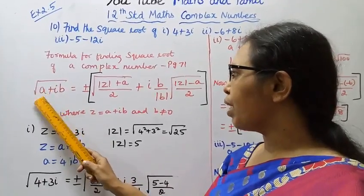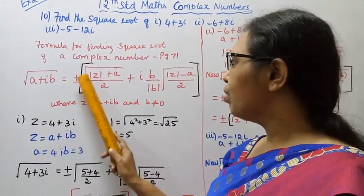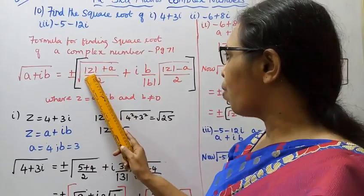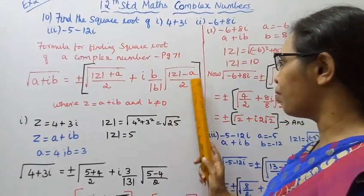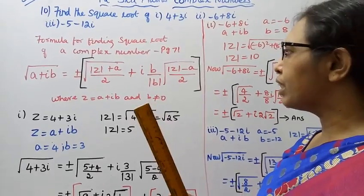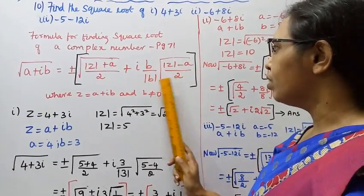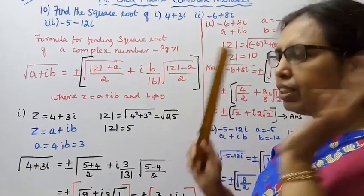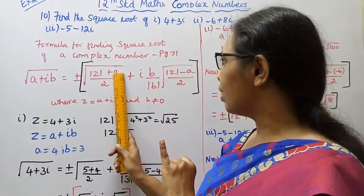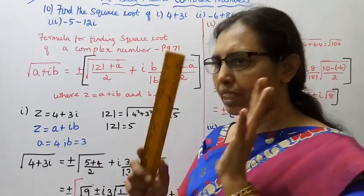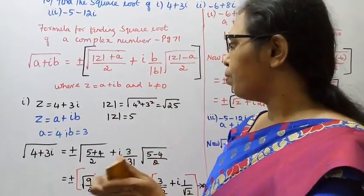The formula: for root of a plus ib, let x plus iy equal to plus or minus: bracket square root of (mod z plus a) by 2, plus i times b by mod b into square root of (mod z minus a) by 2. This is the formula we will use to substitute and find the answer.